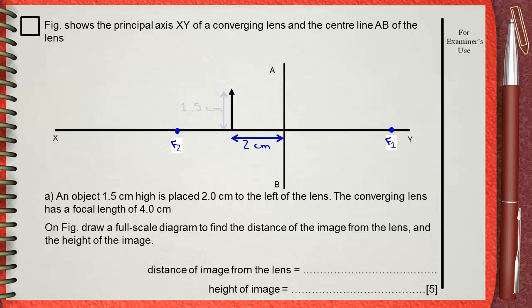Now let's start to draw the ray diagram from the top of the object. Draw a light ray that will be parallel to the principal axis XY. Once this ray meets the center of the lens which is the line AB it will be broken to the focus F1. Draw another light ray that will pass through the optical center of the lens.